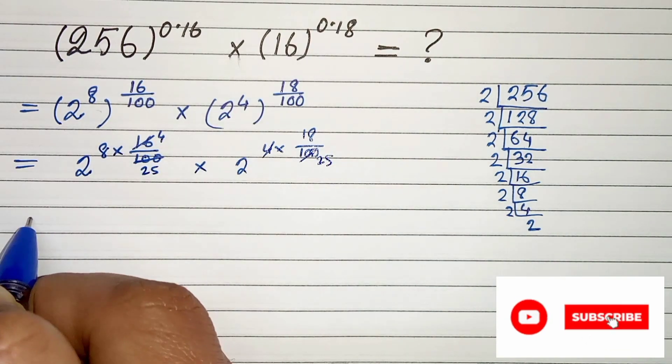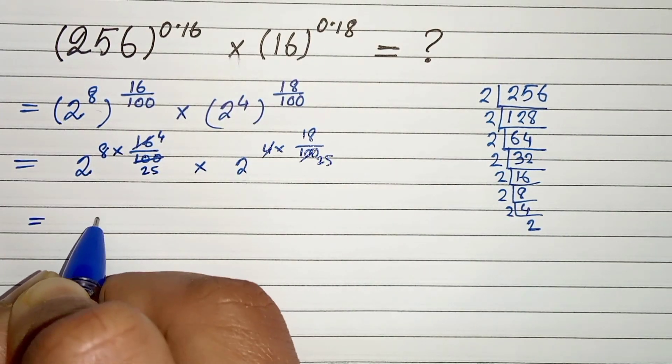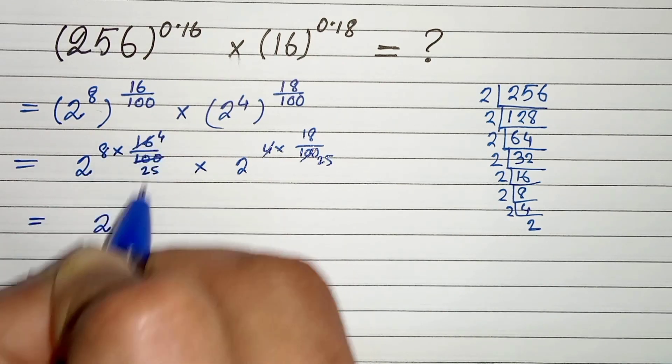Here it will be 25. So in the next step we can write 2 to the power 8, 4 fours are 32.